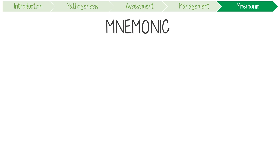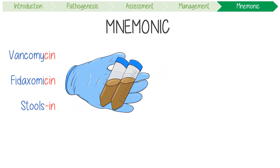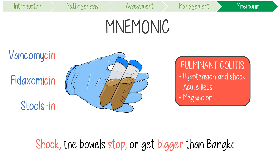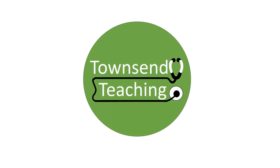Let's summarize with a quick mnemonic. The step-up therapy for C. diff is: vancomycin, fidaxomicin, then transplant stools in. For fulminant colitis: this is when there is shock, the bowels stop, or get bigger than Bangkok — highlighting that shock, an ileus, or the development of a massive megacolon are the defining key features. To manage this, you might need to bring in surgery. If you like infectious diseases and mnemonics, go check out the video on poliomyelitis. Thanks for watching Townsend Teachings.